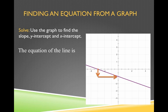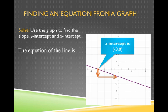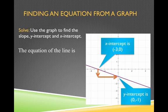So we have an x-intercept of (-3, 0), and we have a y-intercept of (0, -1).